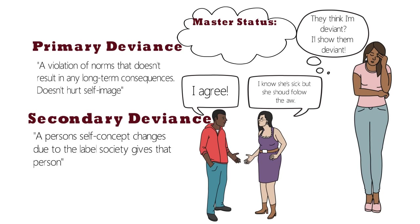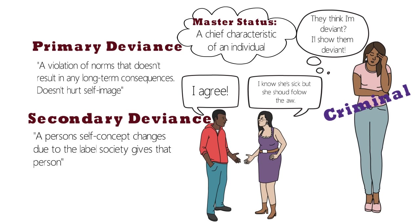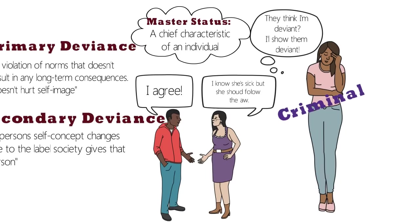A master status is a chief characteristic of an individual. When people are labeled a criminal, it's hard for them to change that status and it follows them everywhere. When someone has committed a felony, they are labeled a felon and must report it when they apply for a job. They can't serve on a jury or vote in many states. Therefore, the master status of felon follows them in everything they do.